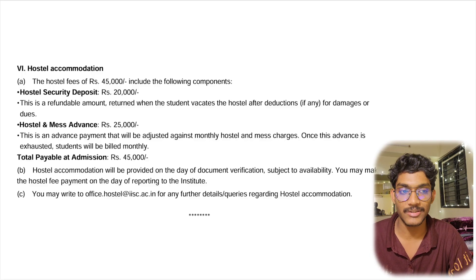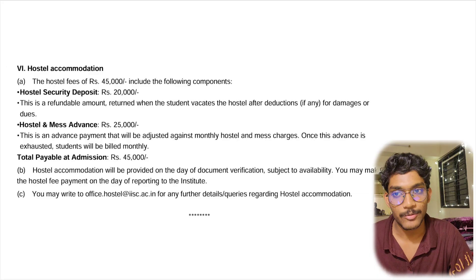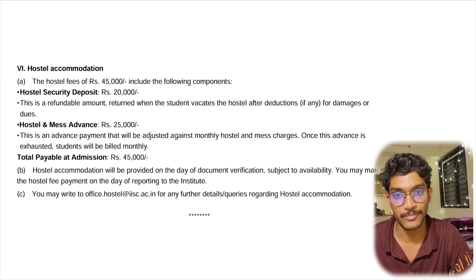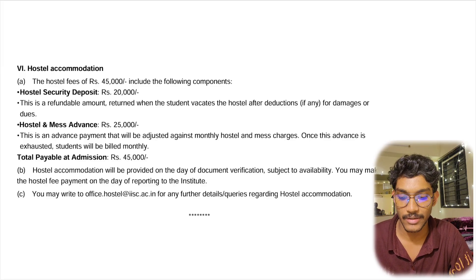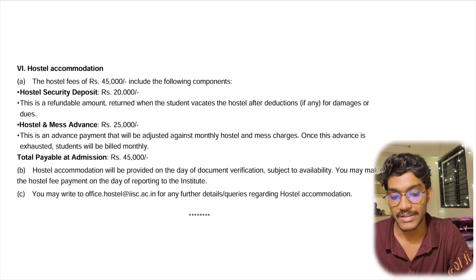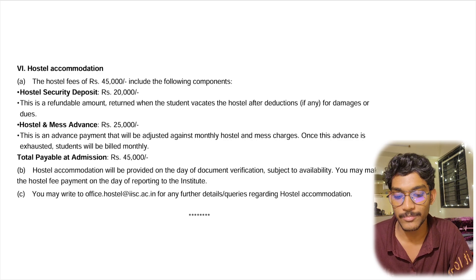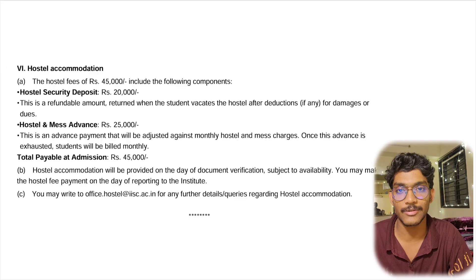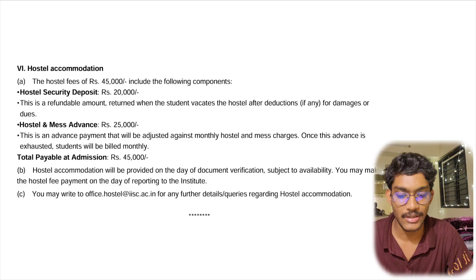So approximately ₹35,000 plus ₹45,000 — around ₹80,000 — is what you have to pay during joining. The initial ₹35,000 is mandatory and must be paid before joining to confirm your admission. For the ₹45,000, you can pay online before joining or during physical document verification. However, there can be network issues inside the campus, so if possible try to pay the whole amount before joining to make the process smoother.